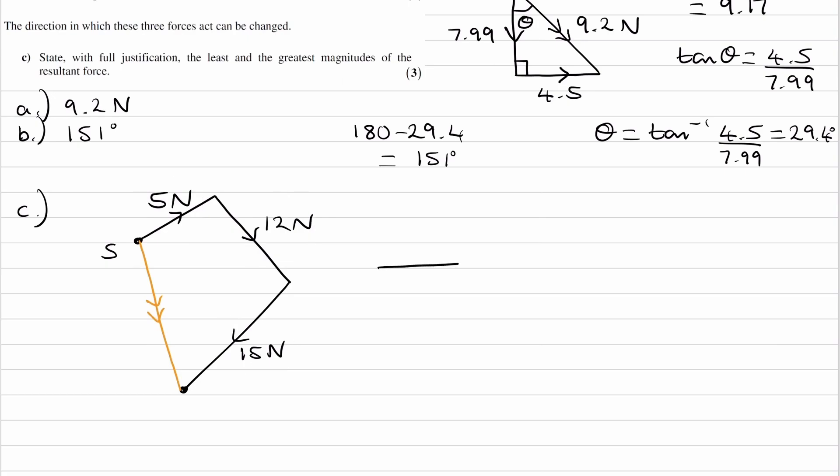So we have 5N, straight after that we have the 12N, and straight after that we have the 15N. And in that case, the resultant would just be the addition of these three numbers, which would be 32N. So the maximum force would be 32.